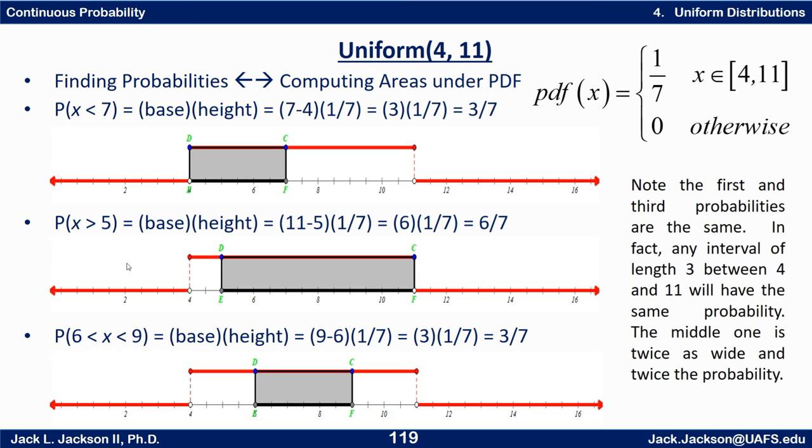For the middle one here, we want the probability that x is greater than 5. So that's going to be from 5 to the right forever. Well, forever in this case might as well be 11, because there's nothing to the right of 11 that has any probability. So this is basically the same as from 5 to 11, which is a distance of 6. 11 minus 5 is 6, so that's the base of 6. The height is one-seventh. Base times height is that area, which is 6/7, and that is the probability.